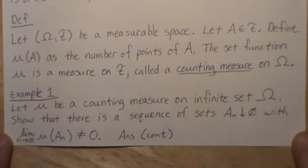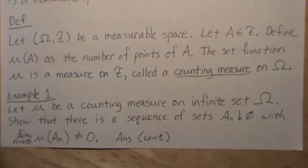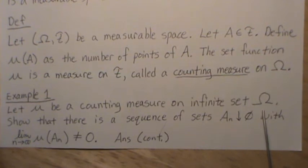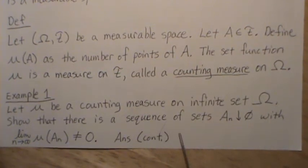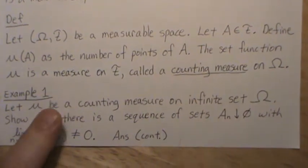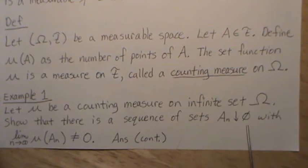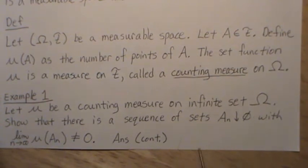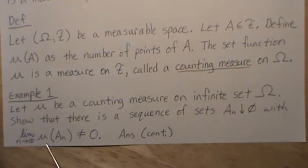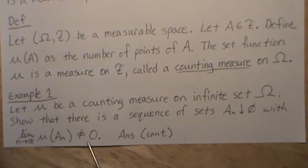An example: let μ be a counting measure on the infinite set Ω, so that there's a sequence of sets that decrease to the empty set with the limit of the measure of these sets not equaling zero.